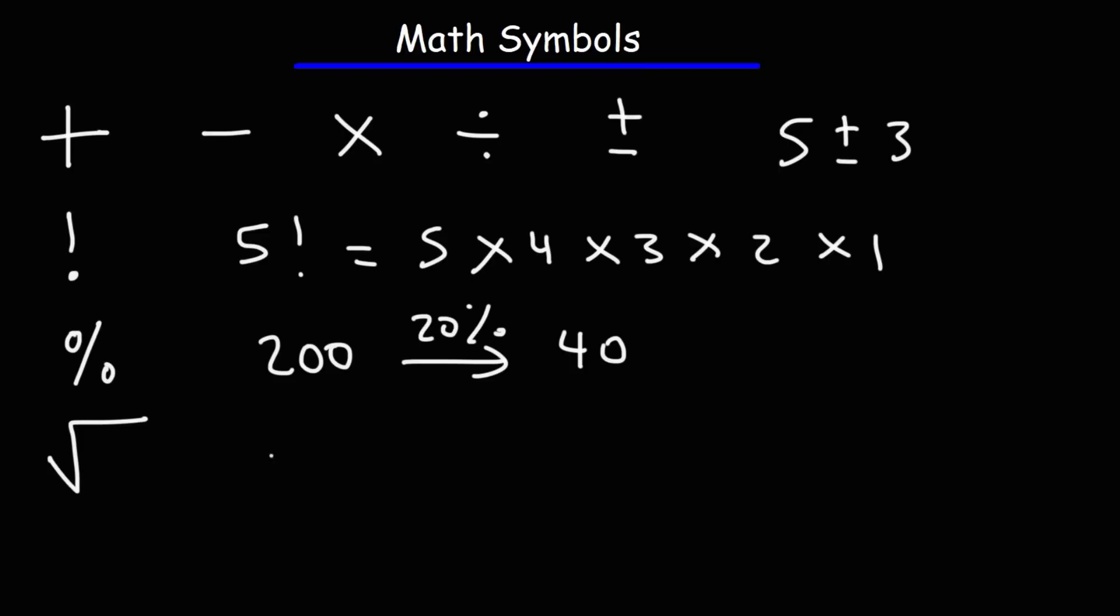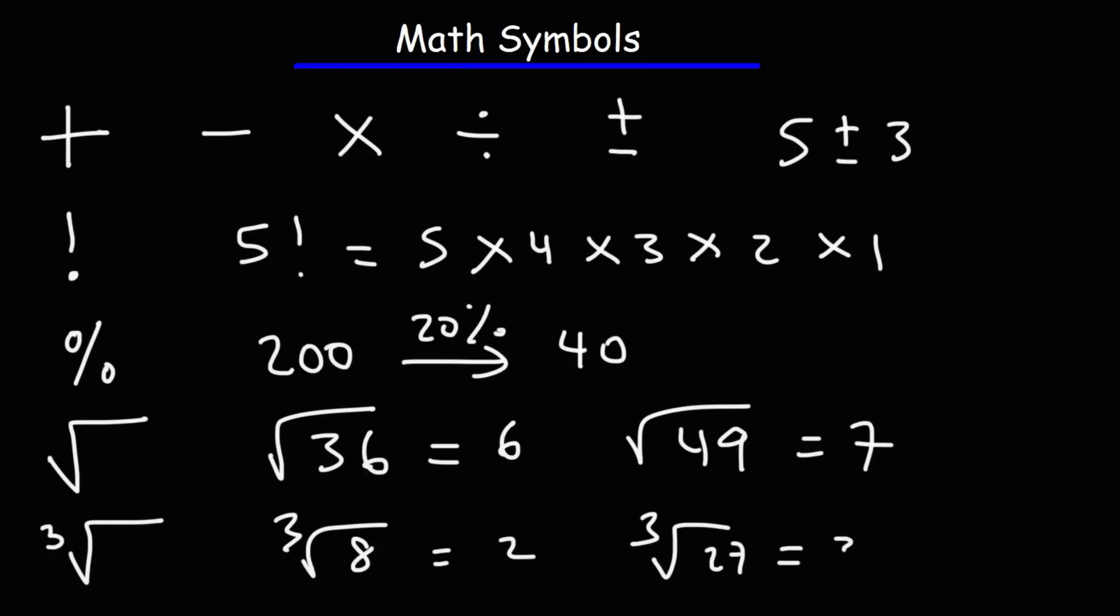Next, we have the square root symbol. For instance, the square root of 36 is 6. The square root of 49 is 7. Following that, we have the cube root symbol. The cube root of 8 is 2, because 2 times 2 times 2 is 8. The cube root of 27 is 3, because it takes 3 threes to get to 27 when multiplied.